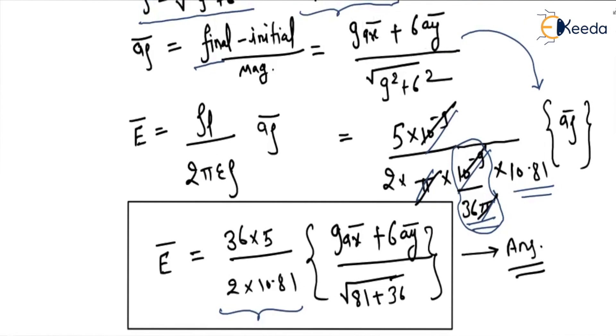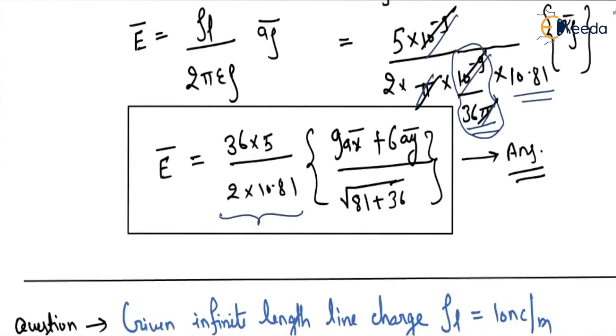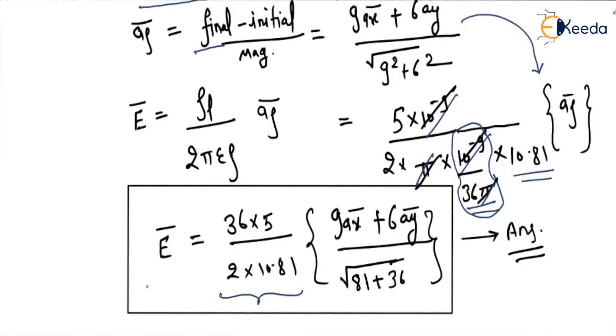And a_rho vector, we have already calculated this a_rho vector: 9â_x plus 6â_y divided by square root of 9² plus 6². So this is our required answer.